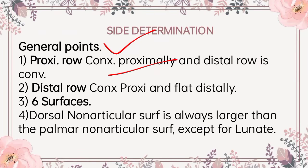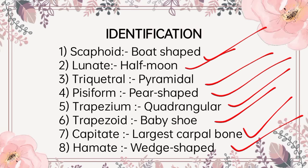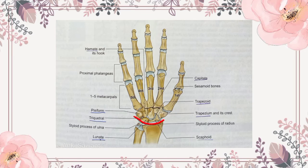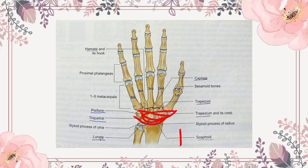Moving further to the distal row: the distal row is convex proximally. The distal row proximally is convex, but distally it is flat as you can see in this diagram. So to summarize: proximal row is convex proximally and concave distally; distal row is convex proximally and flat distally.